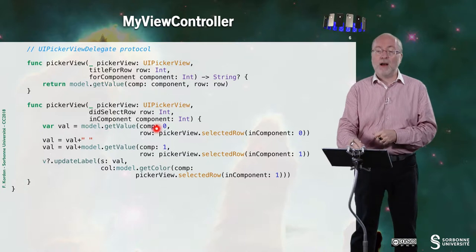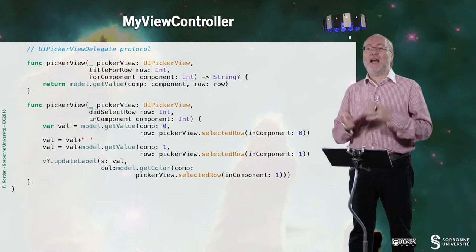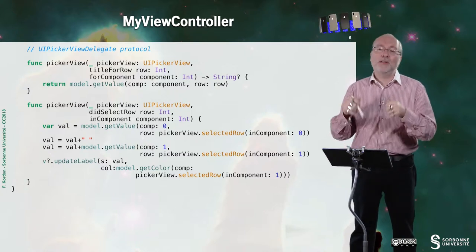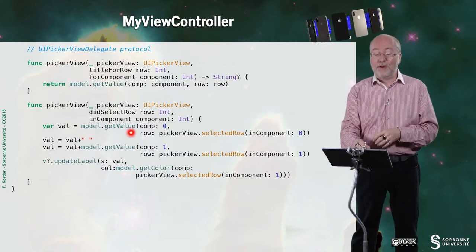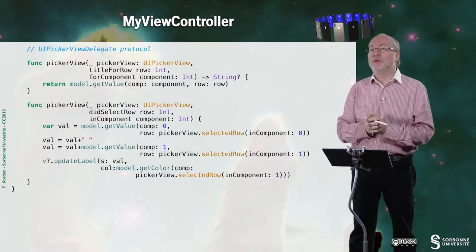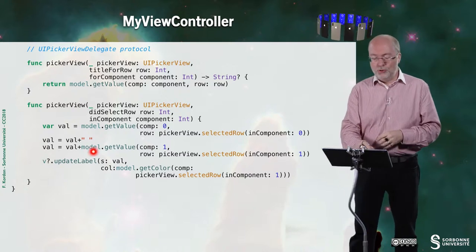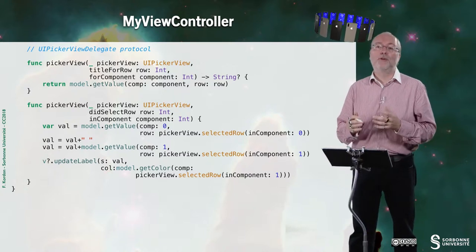And I also have to perform the update. And so what I'm doing, I'm getting, according to what is selected, the values. And I request that from my model. And then I request MyView to do the update of its label.